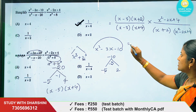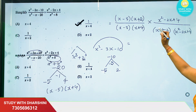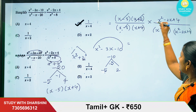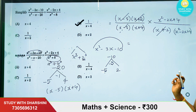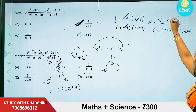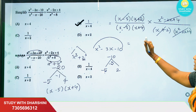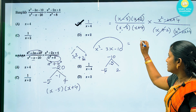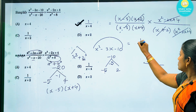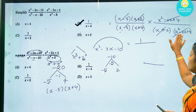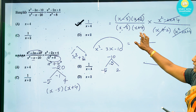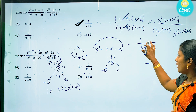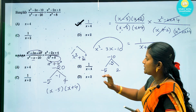Now for simplification, we cancel the same factors. In the numerator and denominator, (x minus 5) cancels with (x minus 5), and (x plus 2) cancels with (x plus 2). The remaining denominator is (x plus 4), giving a final answer of 1 divided by (x plus 4). That is Option B.